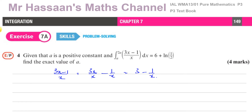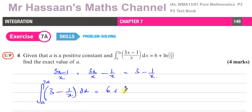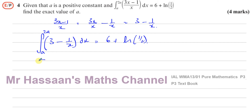So we're going to start by expressing it in the form of 3 minus 1 over x. We have the integral of 3 minus 1 over x with respect to x between the limits of 2a and a, equal to 6 plus ln(1/2), as we're told. We can integrate this and we'll end up with 3x minus — when you integrate 1 over x, it becomes ln of the modulus of x.